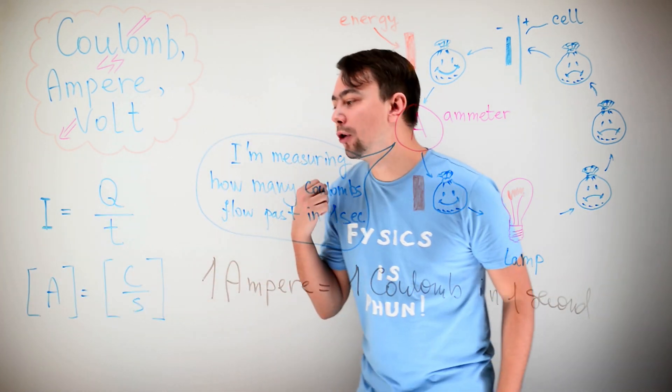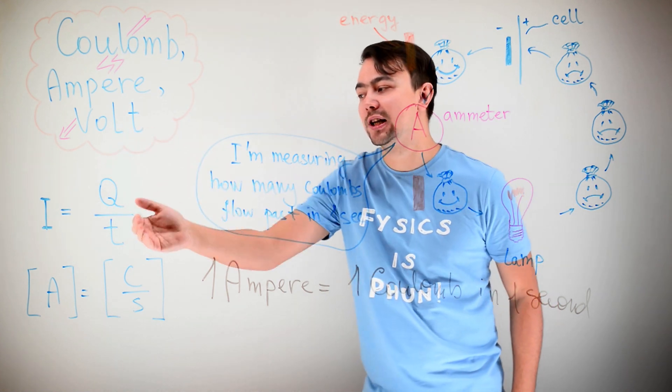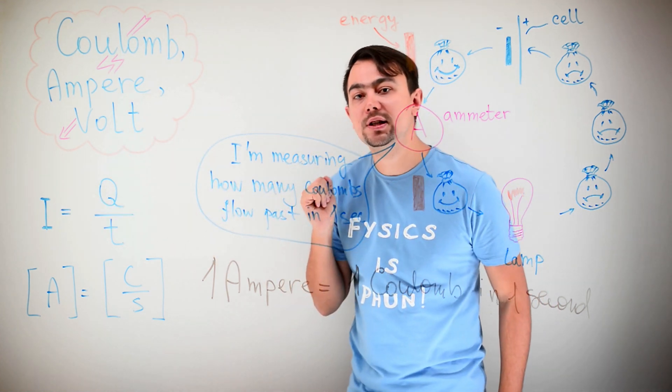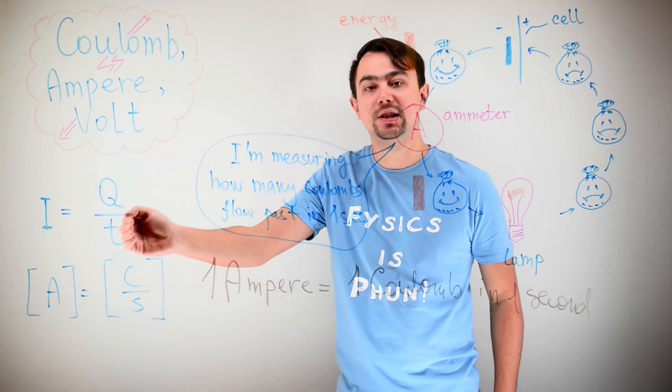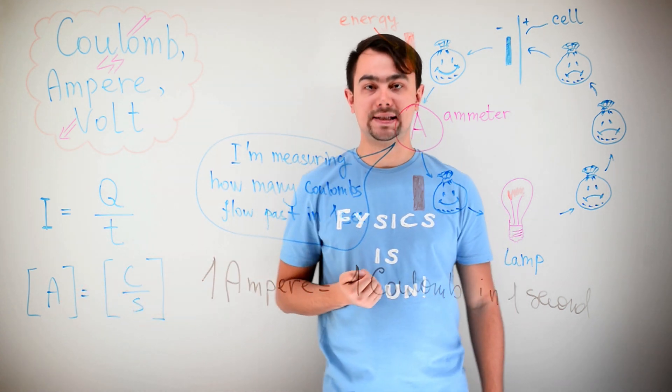If we put it into a formula, it will look like this. I is equal to Q divided by T. Current is equal to charge divided by time. Or, Ampere is Coulomb divided by second.